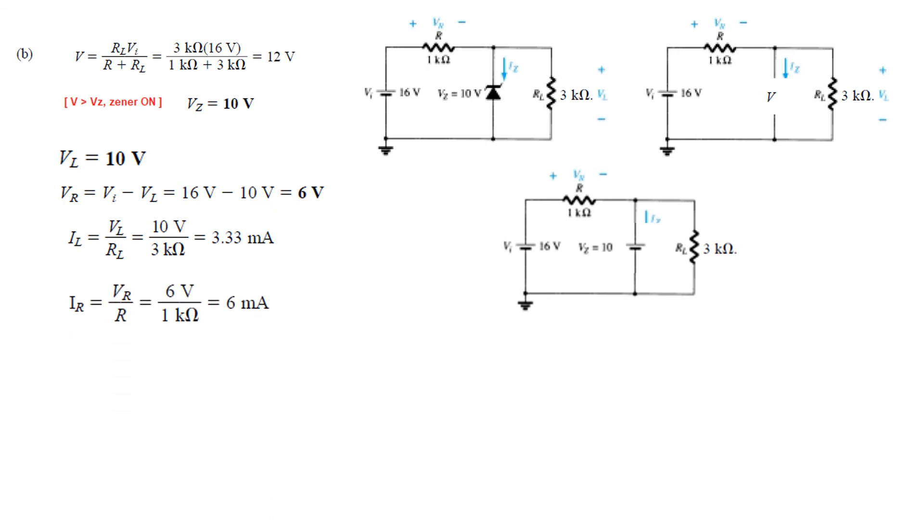And the current through the resistor. So this is the resistor. We have found the value of VR is 6. And R is given 1 kilo. So we get IR 6 milliampere.